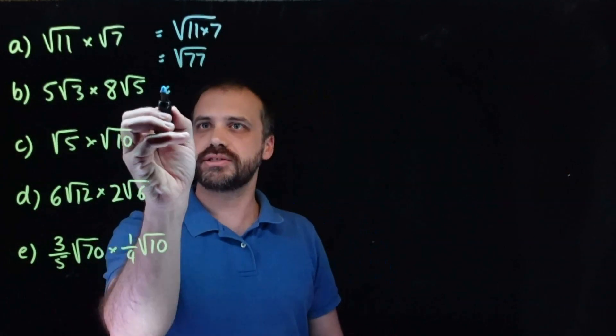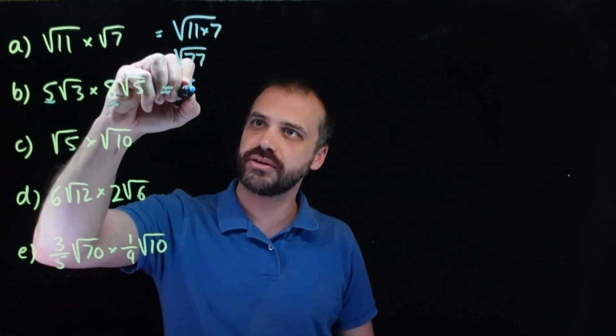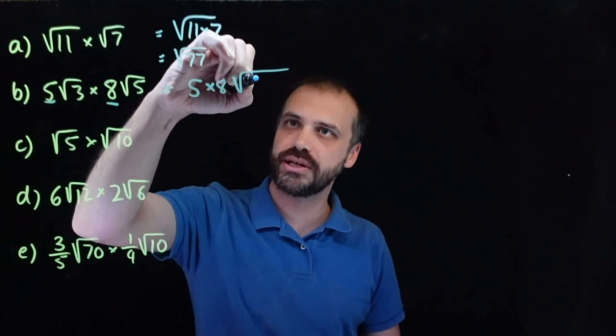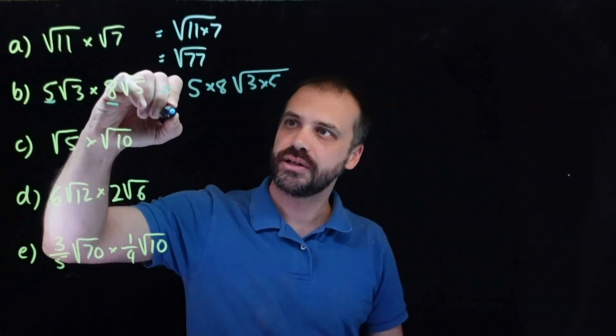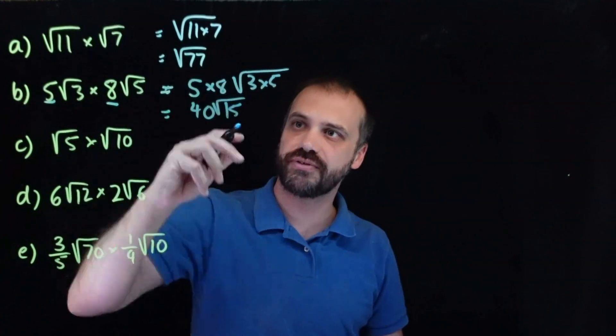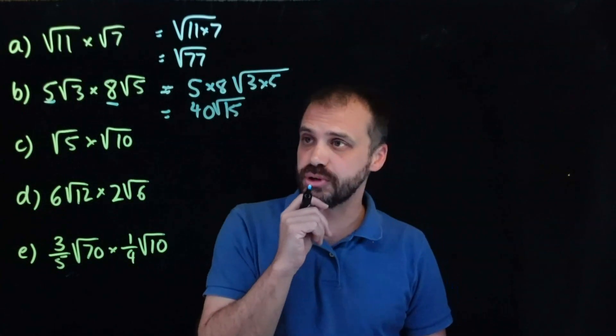In this one here, it's slightly different because there's numbers on the outside. Multiply the numbers on the outside together, 5 times 8, and multiply the numbers on the inside together. So 5 times 8 is 40, and 3 times 5 is 15. Can we simplify that? No, we can't. Let's move on.